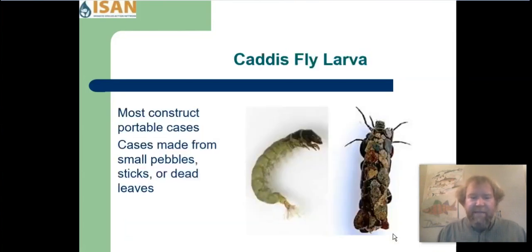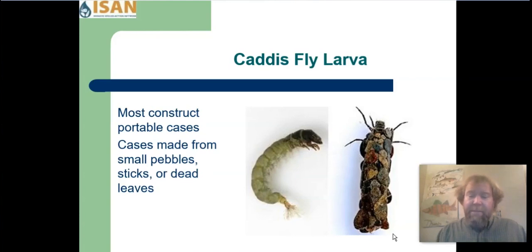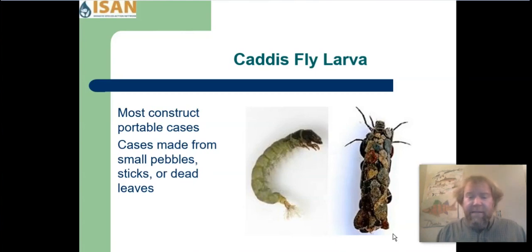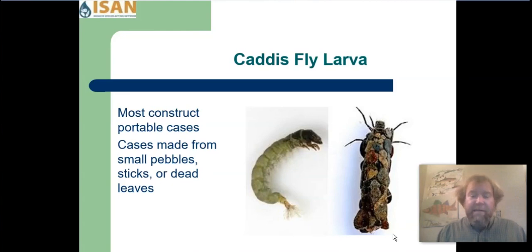Caddisfly larvae have a complete life cycle. Most caddis species will construct a portable case that they surround themselves with. The caddisfly on the right has a case made out of small pieces of sand and pebbles; sometimes they're made out of sticks or dead leaves. The picture on the left is a free-living caddis — some caddisflies do not build a case, but rather graze and crawl around on rocks eating algae until it's time to go through metamorphosis, where they spin silk and change into a pupa.